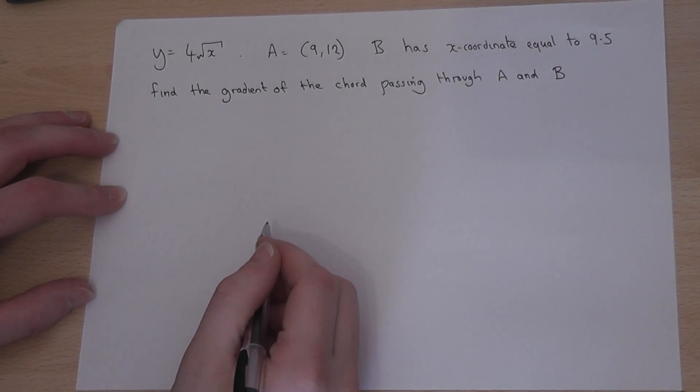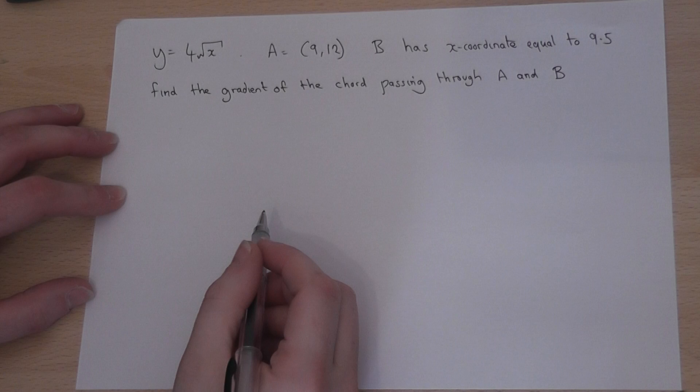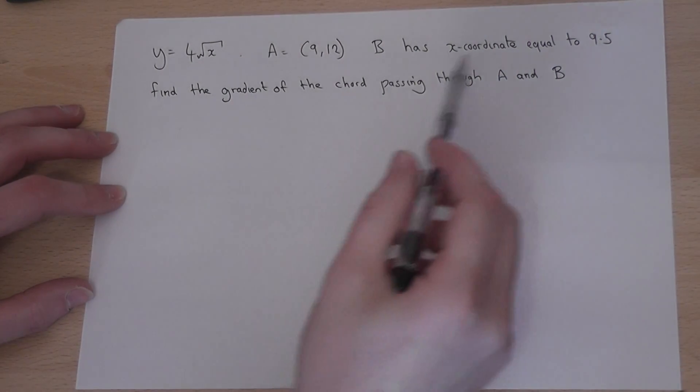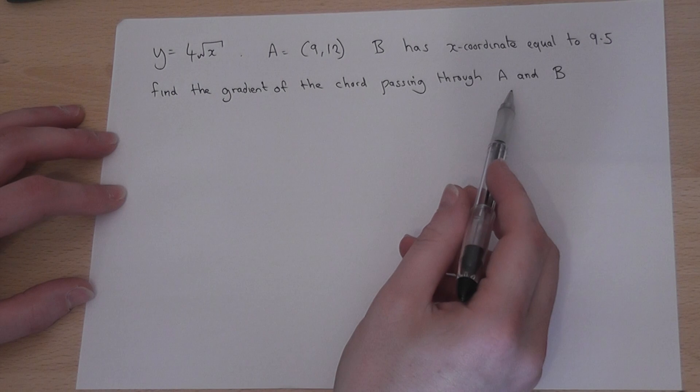This video looks at how you can find, quite simply, the gradient of a line, i.e. a chord, passing through two points on a curve.